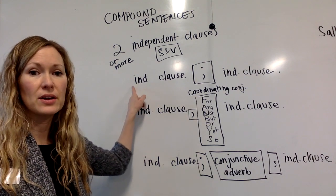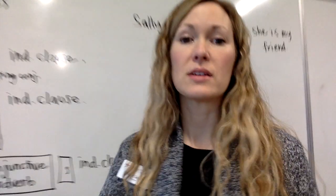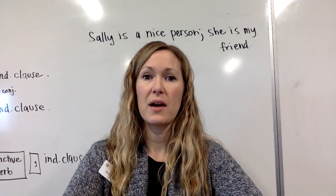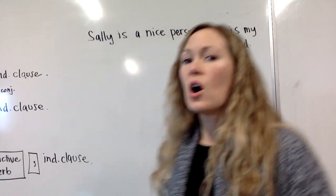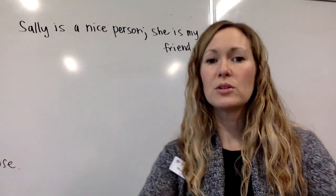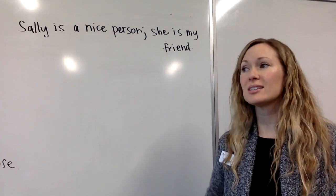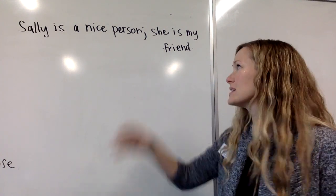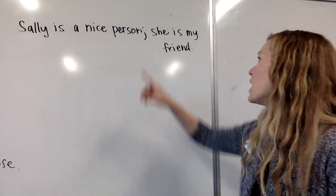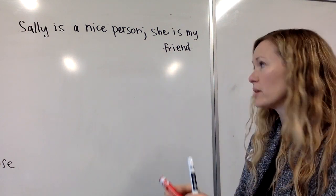Let's look at our first example: an independent clause with a semicolon and another independent clause. The sentence is: Sally is a nice person; she is my friend. Our big clue here is the semicolon. Sally is a nice person — that's a sentence that stands on its own, an independent clause with a subject and verb and a complete thought. Related to it: she is my friend, connected by the semicolon.